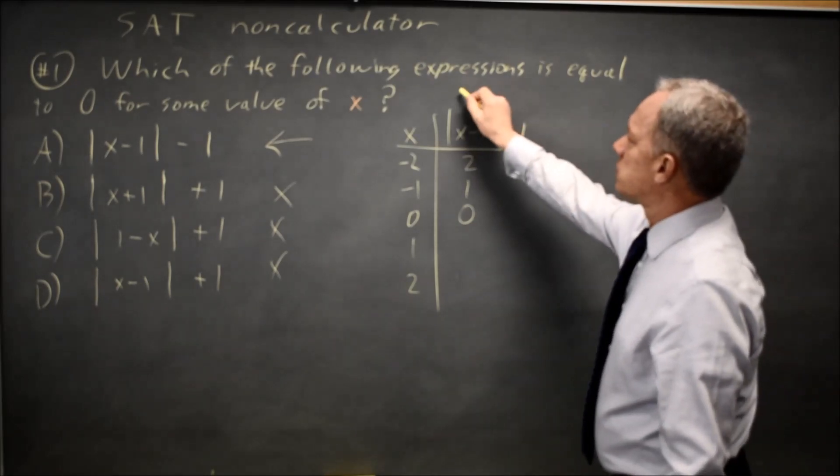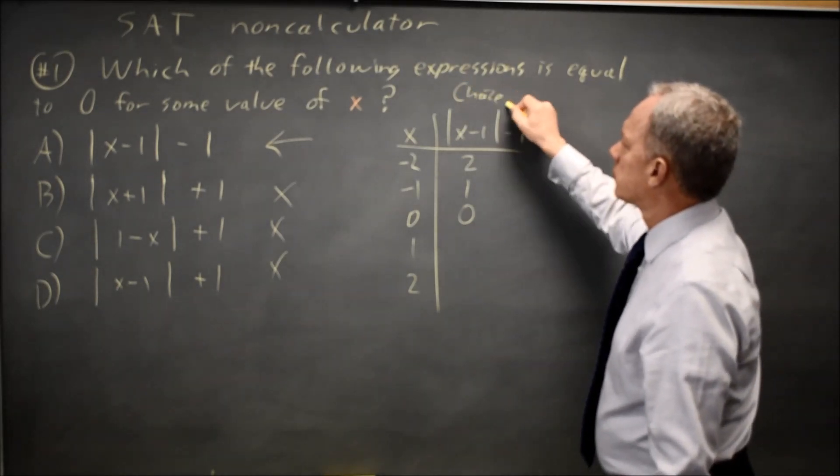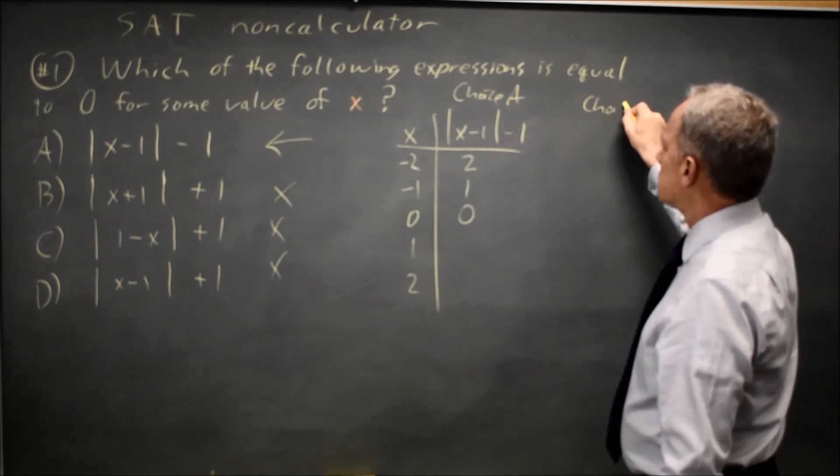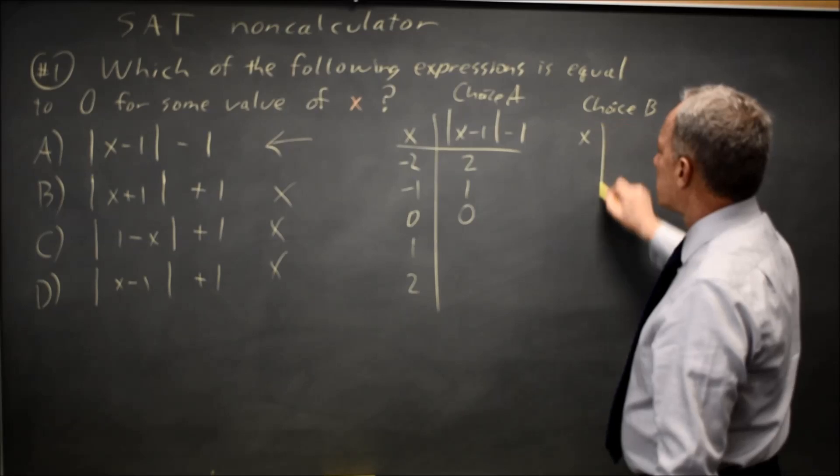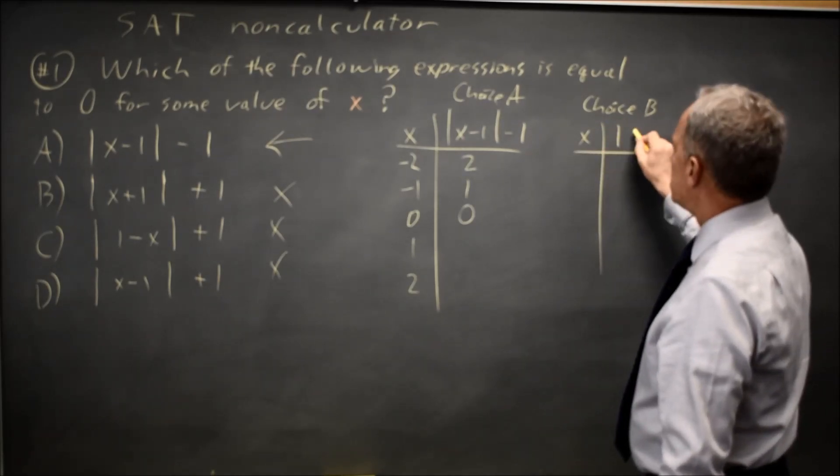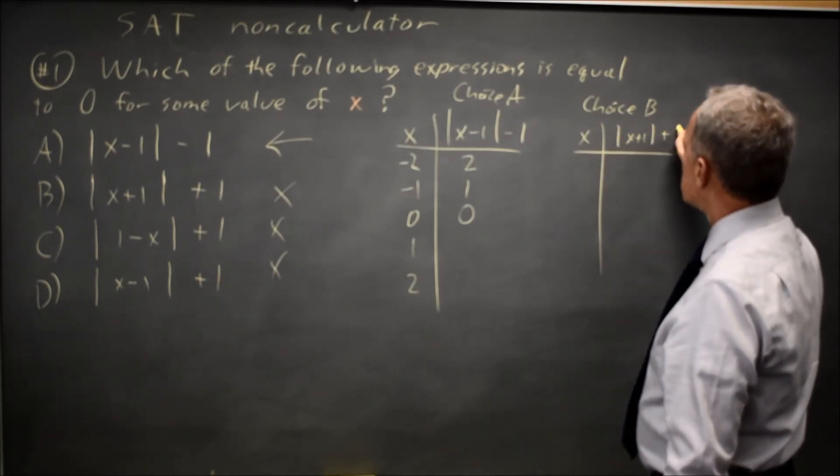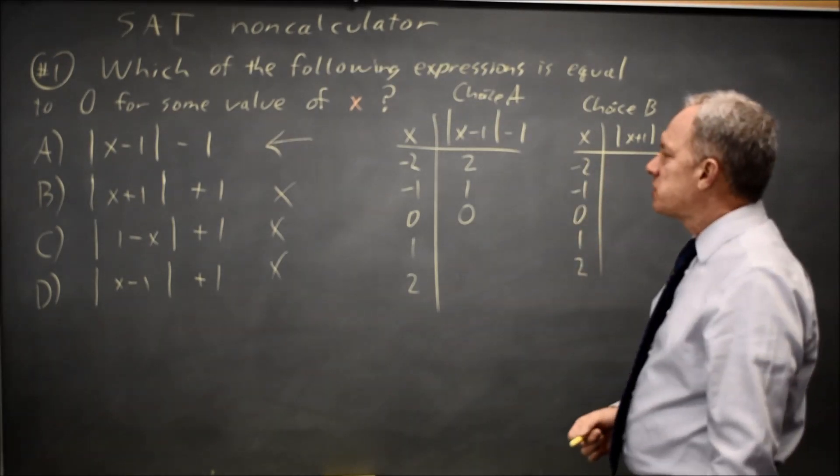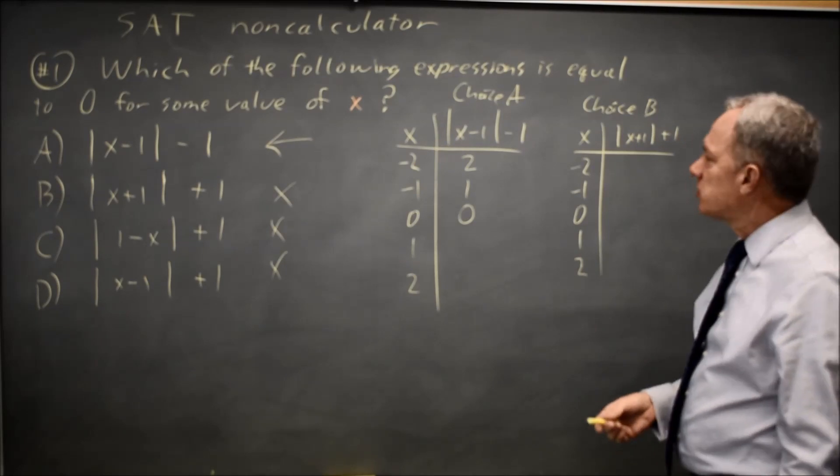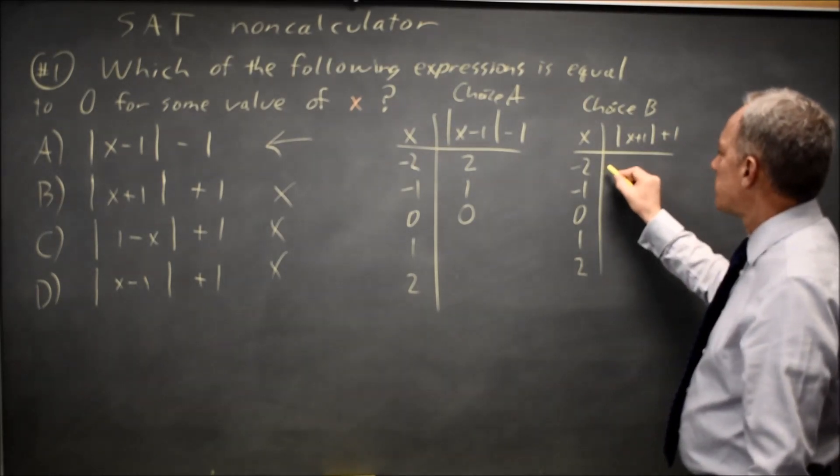If I did the same thing for, for example, choice B, so this is choice A, for choice B, x and absolute value of x plus one plus one at negative two, negative one, zero, one, two. And these are not necessarily the points you need, but they're a good place to start to get an idea of the shape of the graph.